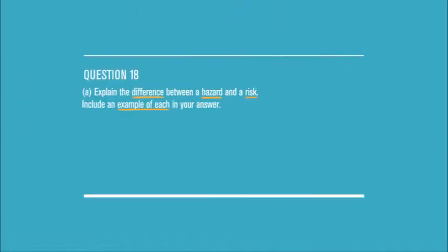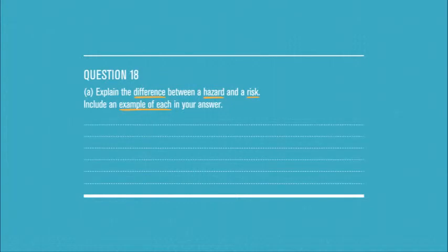Question 18 is an example of a short answer question taken from the 2013 HSC paper. The question asks you to explain the difference between a hazard and a risk, and to include an example of each in your answer. As you can see, this question is worth three marks and you've been given roughly six lines to answer it.